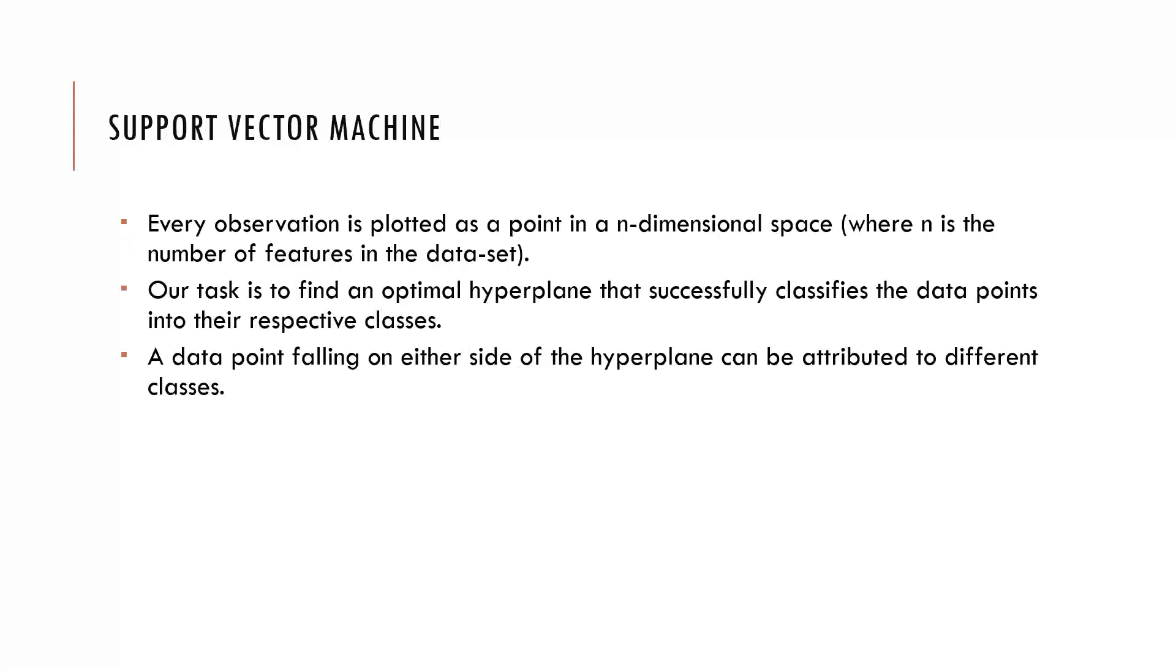Coming to Support Vector Machine, what it does with the data is it takes the feature vectors and plots it in an n-dimensional space where n is the number of features in the dataset. The model's goal is to find an optimal hyperplane which can successfully classify the data points into their respective classes. Our goal is to find the most optimal hyperplane which serves as a decision boundary to classify the models based on their behavior using the support vectors. Data points falling on either side of the hyperplane can be attributed to different classes.